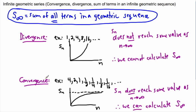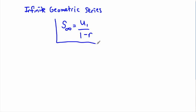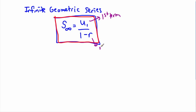Using the original geometric series equation, it turns out the formula for the infinite geometric series is very simple: S infinity equals u1 over 1 minus r. That's the equation. Here u1 is the first term, and r is the common ratio — the number you multiply each term by.